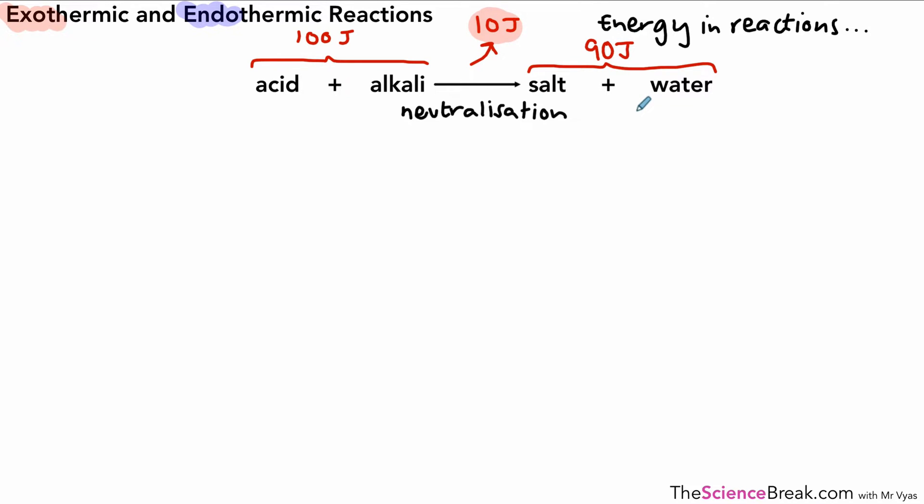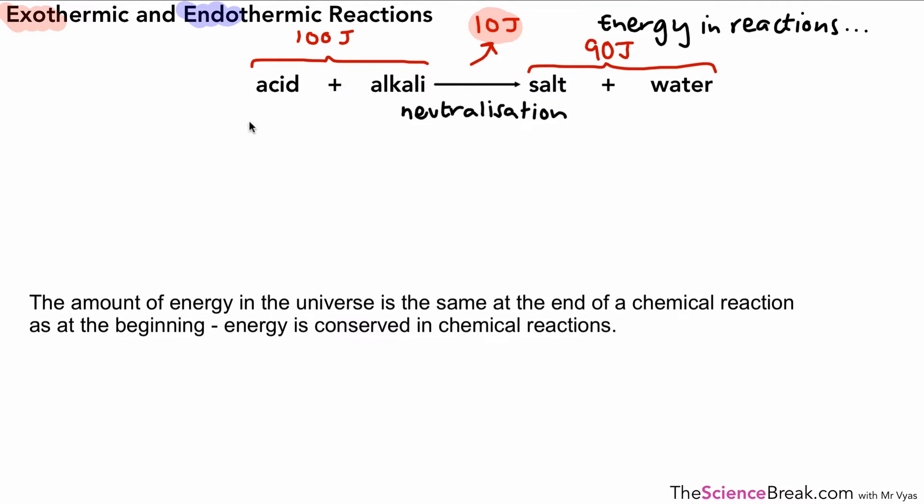Now we can actually take the example and use it to figure out a rule for energy transfers in chemical reactions and that is the idea that the amount of energy in the universe is the same at the end of a chemical reaction as it was at the beginning. Energy is conserved in chemical reactions and as we said we talk in terms of the whole universe not just the area in which the reaction is happening.